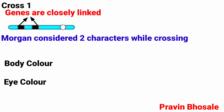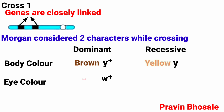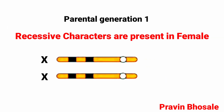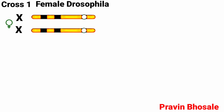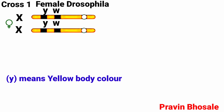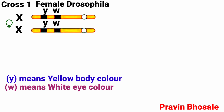In body color, brown is dominant and yellow is recessive. In eye color, red is dominant and white is recessive. In parental generation 1, recessive characters are present in the female. The female Drosophila has two X chromosomes, and on these X chromosomes recessive genes are present — that is small y and small w — meaning yellow body color and white eye color.